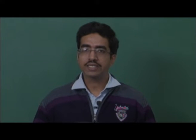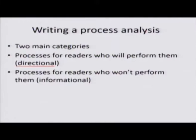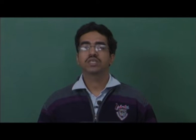Moving on to the next aspect: when writing a process analysis, there are mainly two categories — directional and informational. Directional means you are writing for those who are going to perform that process, giving proper directions. Informational is for readers who are not going to perform the process; the goal is to provide information about it. Let us look at each in detail.